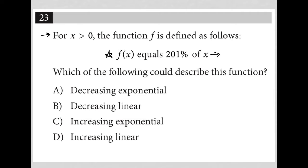I'm going to rewrite this as f(x) = 2.01, which is the decimal version of 201%. And then 'of x' just means times x, so 2.01x.